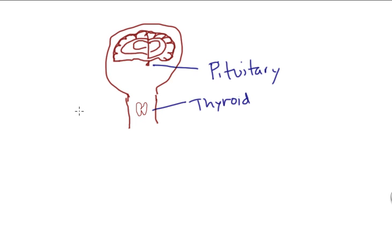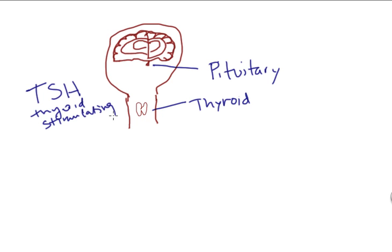One of the things that's always confusing about glands is how do you control them? One of the things that gets confusing about the thyroid is that a common test we measure is called TSH, or thyroid stimulating hormone. What TSH does is it is released by the pituitary and travels down to the thyroid, where it tells the thyroid to make thyroid hormone.